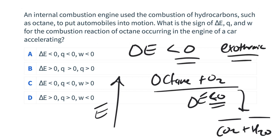We can't always look at a reaction and predict it, but combustion is a type of reaction we can predict would proceed in an exothermic fashion. As we get to the end of the chapter, we'll talk about bond strengths and how the relative bond strengths of the products here are stronger than those in the reactants — that's where the energy difference between reactants and products comes from.